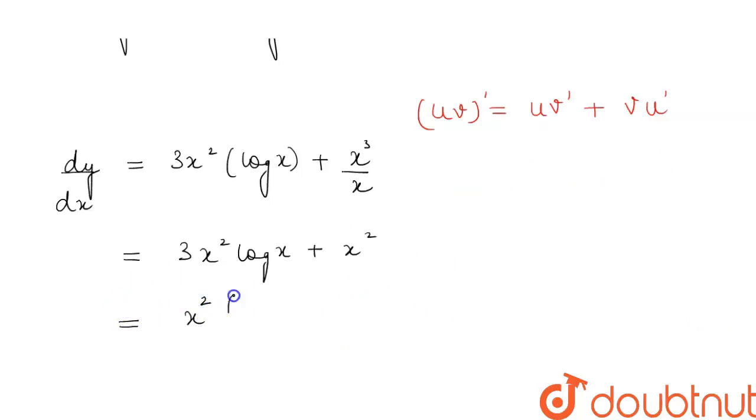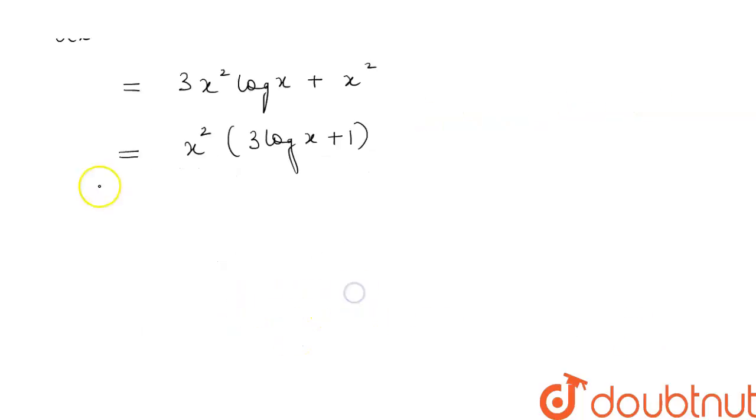common, this will be equal to x²(3 log x + 1). Now we will again differentiate our function, so we get d²y/dx². Again applying the product rule, this becomes 2x(3 log x + 1) + x²